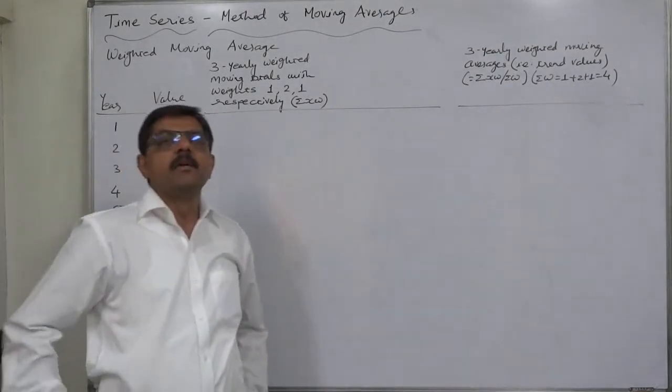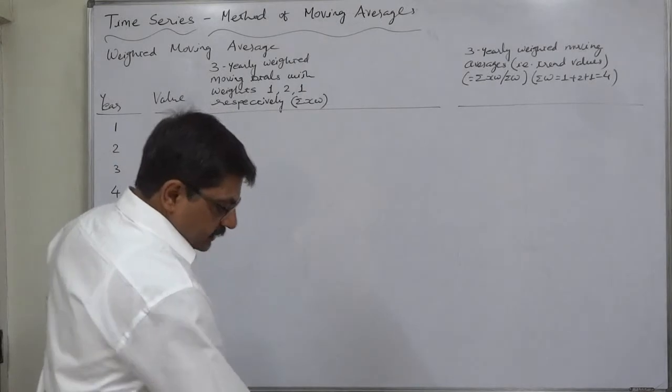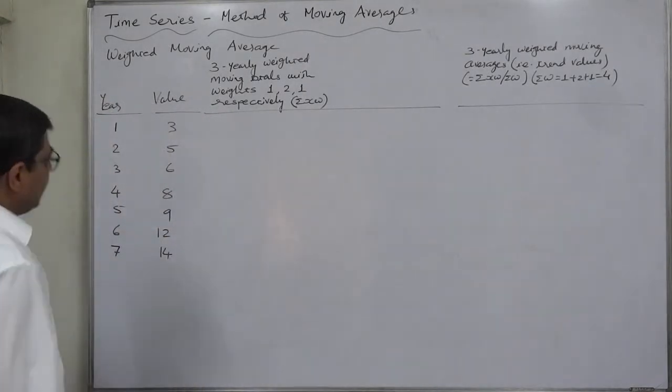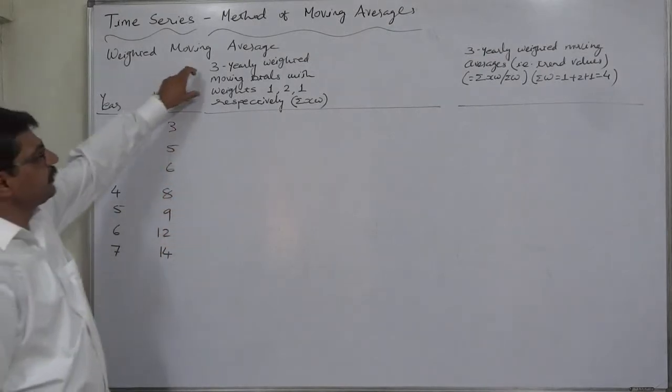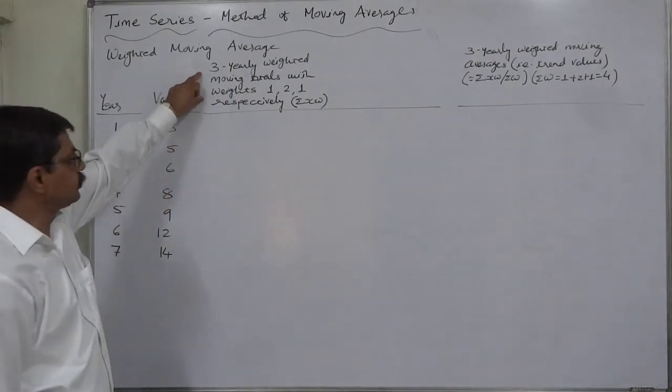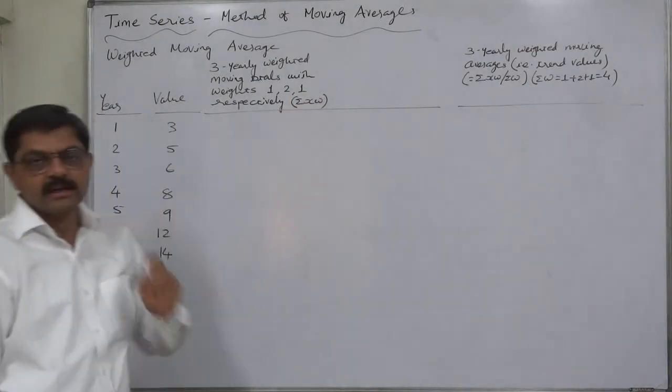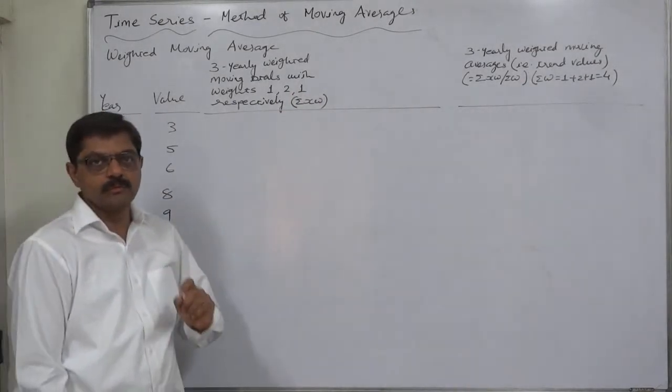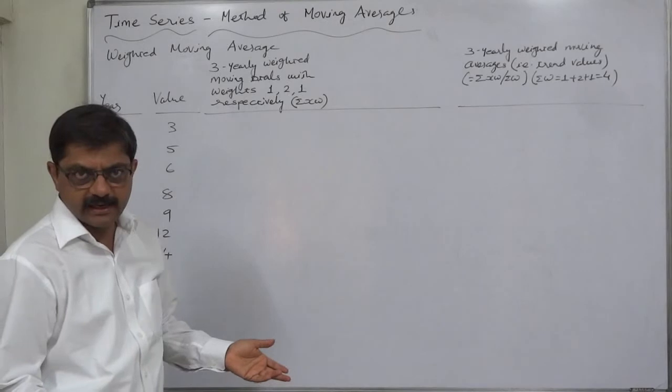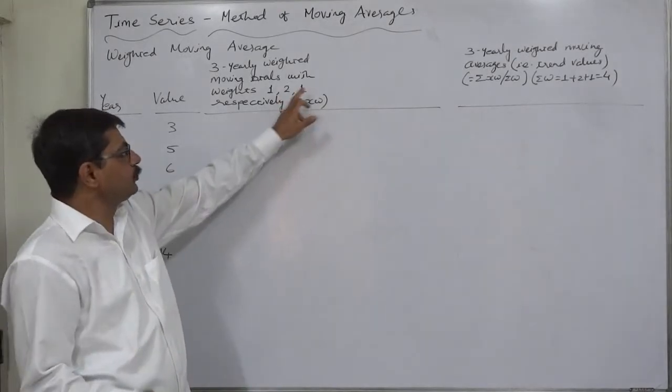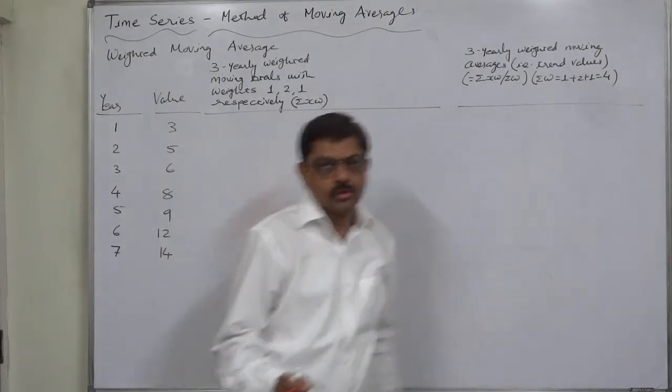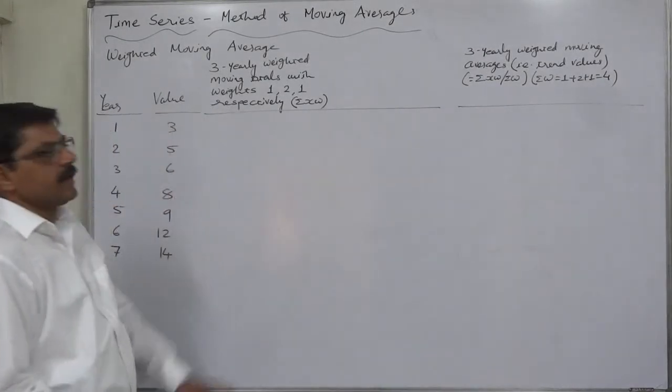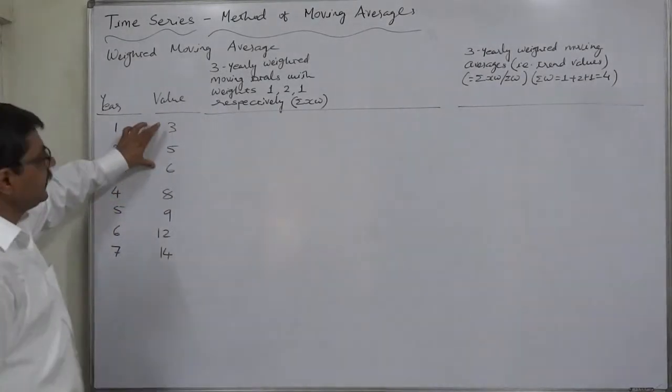Then it is divided by the summation of the weights, and the result is the weighted moving average. Let's do a small case where we need to find out the three-yearly weighted moving average, and the weights to be taken are 1, 2, and 1 respectively. That means the first value should be multiplied by 1, second by 2, third by 1. So sigma w will be 4, so we shall divide the summation by 4 instead of 3.